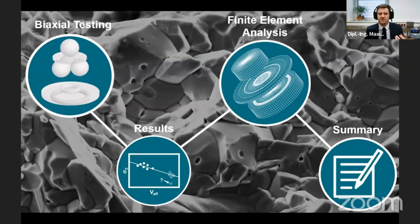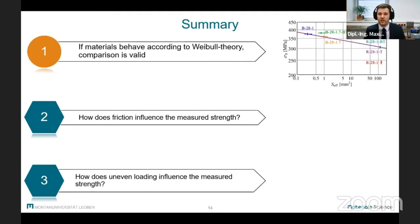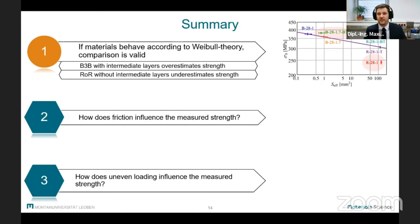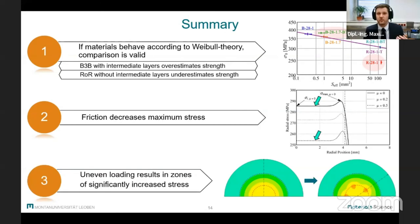So let's go back to the three questions from the beginning. First, is it possible to compare the results? I would say it is possible as long as the material behaves according to Weibull theory and when some care is taken into account when testing with intermediate layers. Keep in mind that Ball-on-Three-Balls results with layers generate overestimated strength and that Ring-on-Ring results without intermediate layers underestimate the strength. Then, how does the friction influence the measured strength? Well, if friction is taken into account, a general decrease in stress was observed, which then in turn led to an apparent increase in strength.